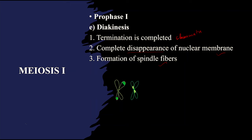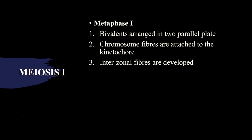Now let's enter into metaphase 1. In metaphase 1, the chromosomes will be arranged in a parallel plate. This is one chromosome and this is another — they are parallel to each other. There will also be the formation of spindle fibers from the centriole.